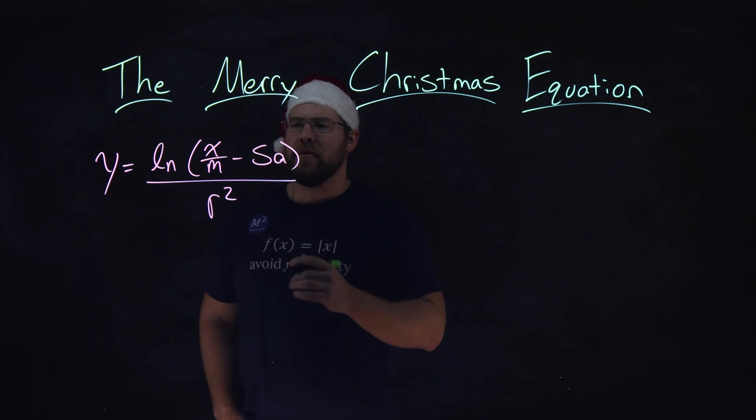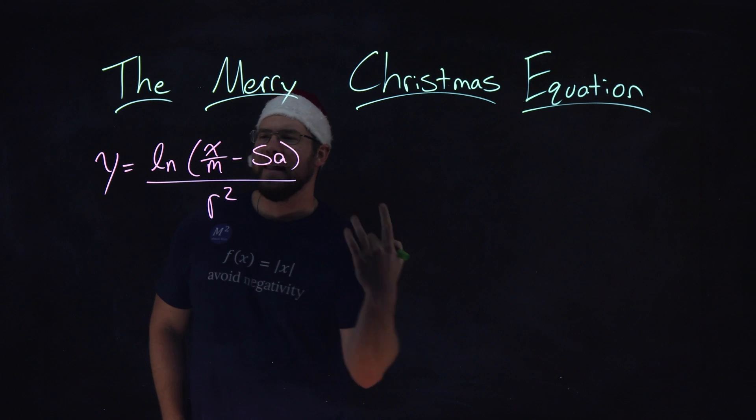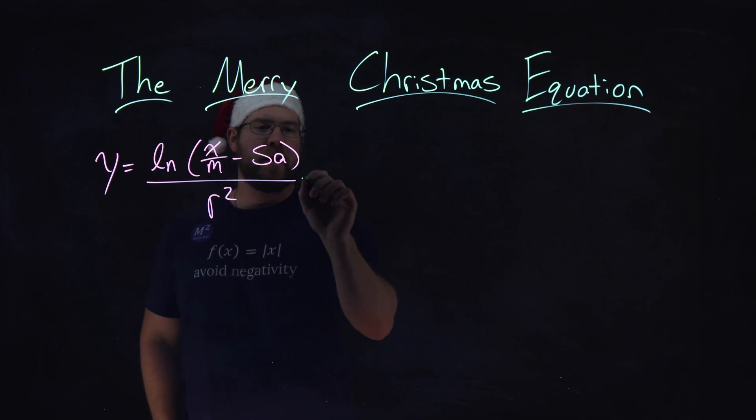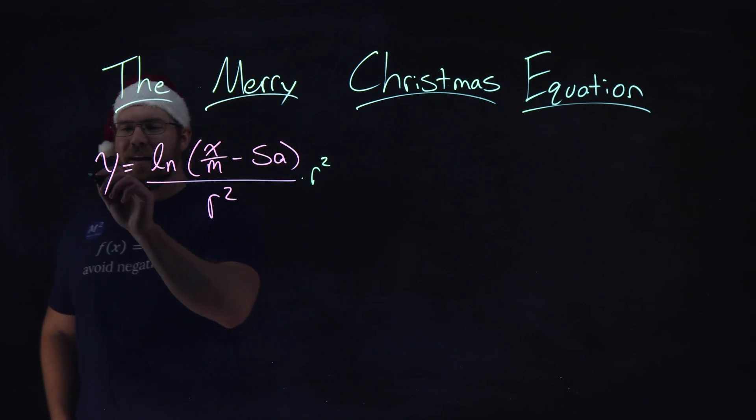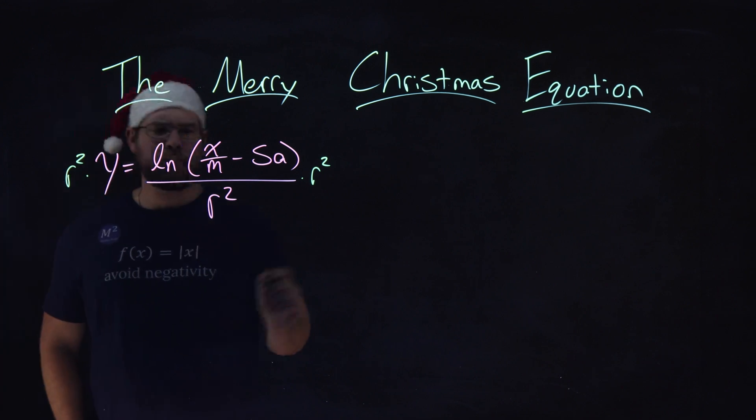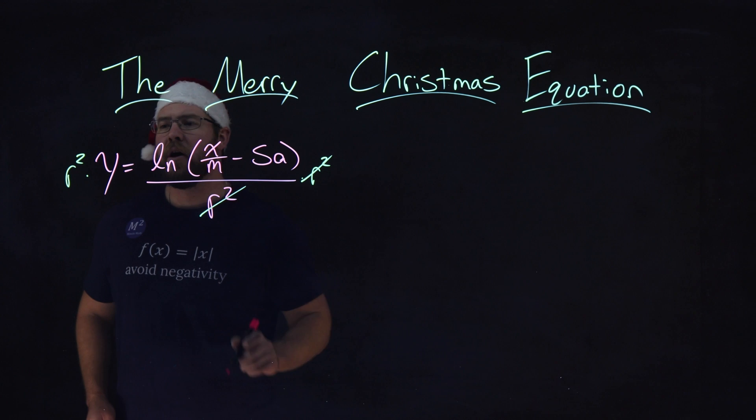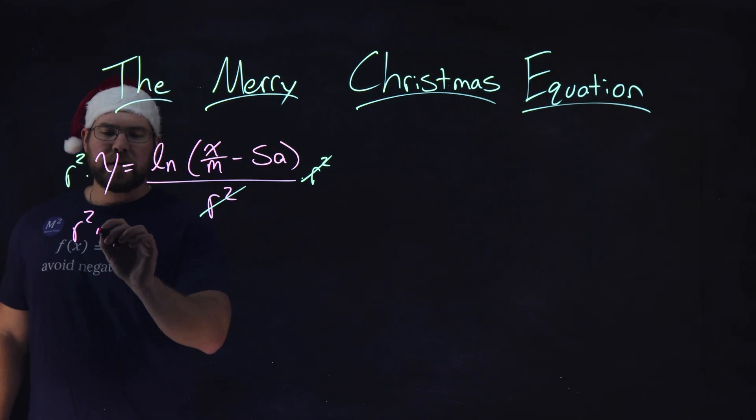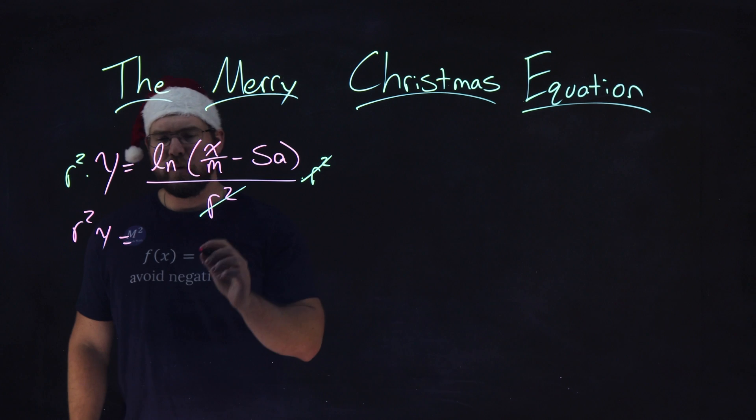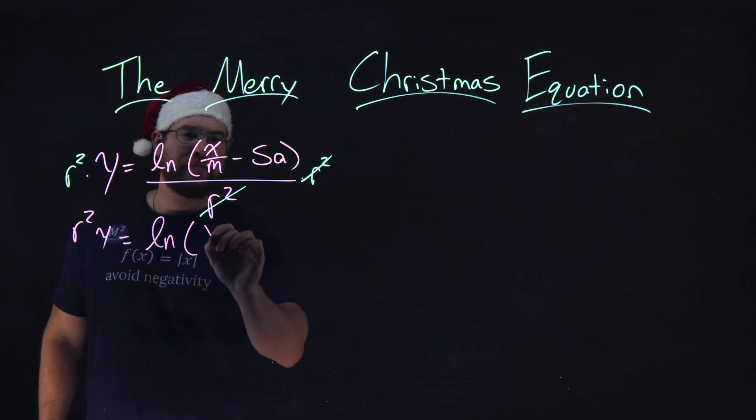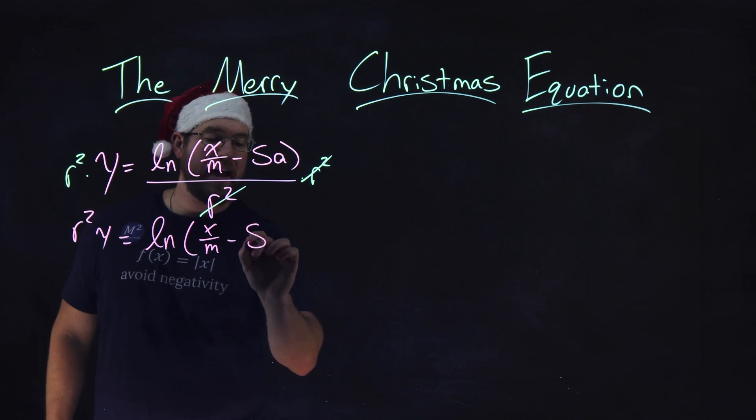So, first thing I want to do here is, I see that r squared, let's bring it over to the left-hand side. Multiply both sides by that r squared. R squareds cancel right there, and what are we left with on the left side? Well, we have an r squared times a y equals the natural log of the x over m minus sa.